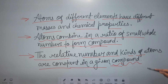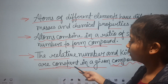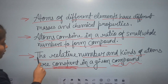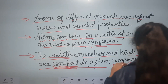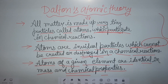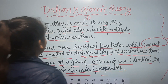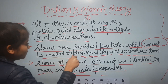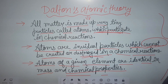The last point is: the relative number and kinds of atoms are constant in a given compound. It means in a compound, the kinds of atoms cannot vary — the relative number and kinds of atoms are constant. These are the main points of Dalton's Atomic Theory. Atoms are made up of very tiny particles, participate in chemical reactions, and are indivisible particles which cannot be created or destroyed.